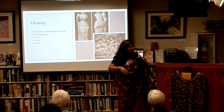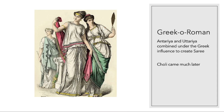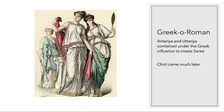Saree evolved with time and the Greeks had a lot of influence on it. The statue we saw earlier showing women with fabric on their shoulder came from Greco-Roman influence. One of the Indian Maurya kings — around 600 to 700 BC — married a Greek princess named Cornelius, who was fashionable for her time. She introduced taking one side of the draped fabric over the shoulder, which is where one of the first variations of the saree came from.